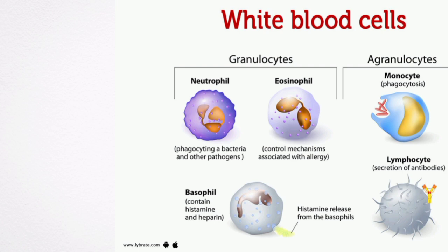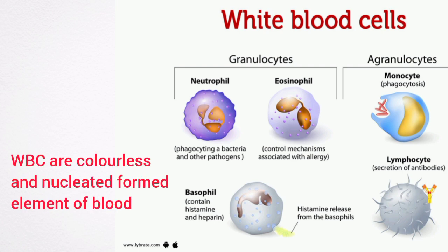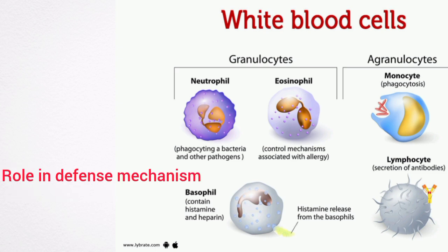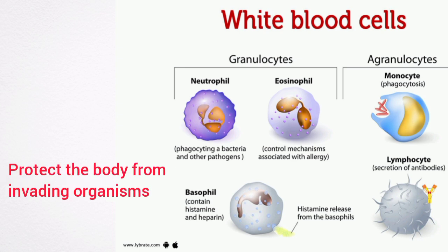The white blood cells or leukocytes are the colorless and nucleated formed elements of blood. Compared to red blood cells, the white blood cells are larger in size and lesser in number. Yet these cells are important like the erythrocytes, because of their role in the defense mechanism of the body and because they protect the body from invading organisms by acting like soldiers.